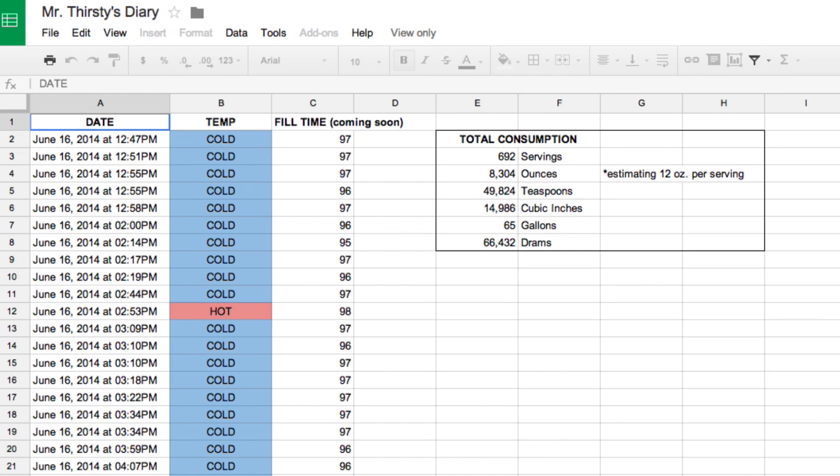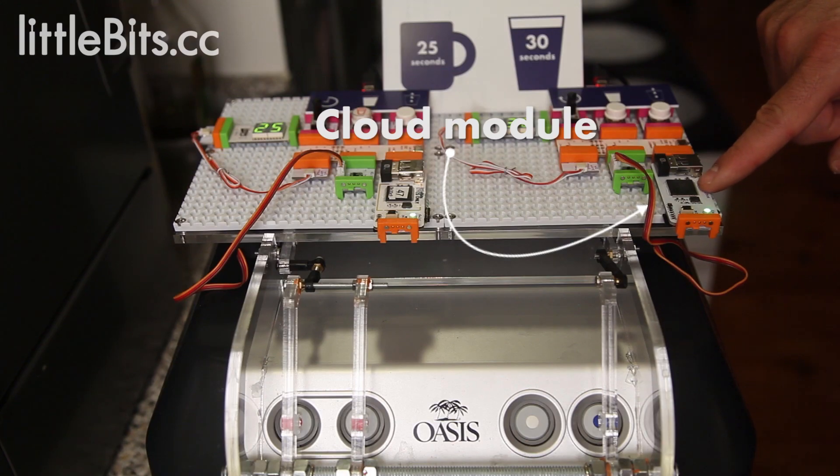Every time Mr. Thirsty fills a glass, he logs it to a Google spreadsheet using IFTTT and the cloud module.